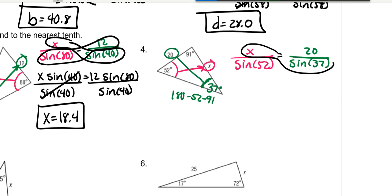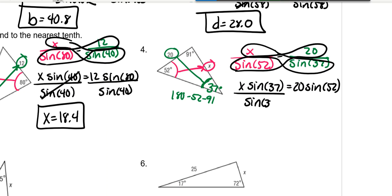Cross multiply. X times the sine of 37 is equal to 20 times the sine of 52. Divide both sides by the sine of 37.